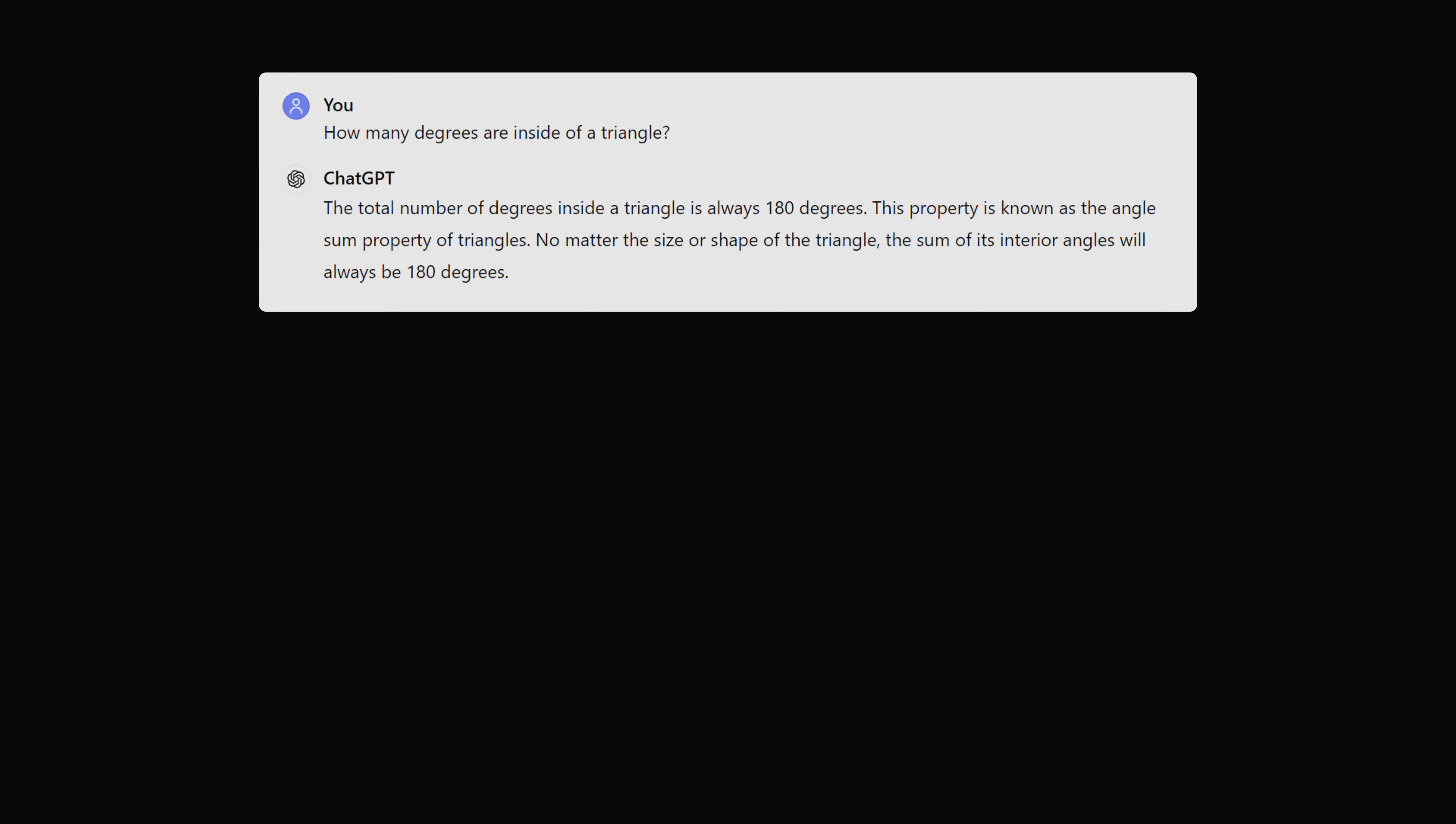I pose the same question to ChatGPT. How many degrees are inside of a triangle? The total number of degrees inside a triangle is always 180 degrees. This property is known as the angle sum property of triangles. No matter the size or shape of a triangle, the sum of its interior angles will always be equal to 180 degrees.